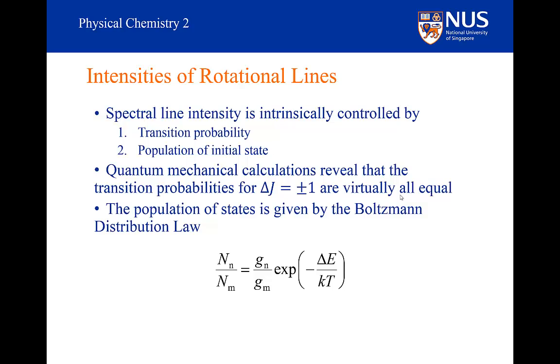However, the population of the states changes dramatically. This is the Boltzmann distribution law. This expression relates the number of molecules in the n-state compared to the number of molecules in the m-state. The ratio depends on the ratio of the degeneracies in the n-state over the degeneracy in the m-state. So if the n-state is more degenerate than the m-state, there is going to be more molecules in the n-state.